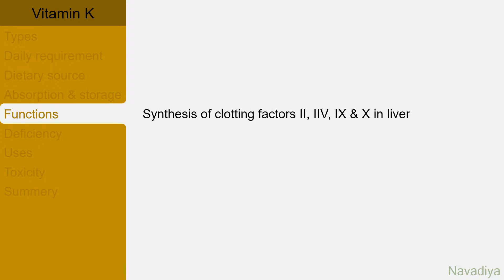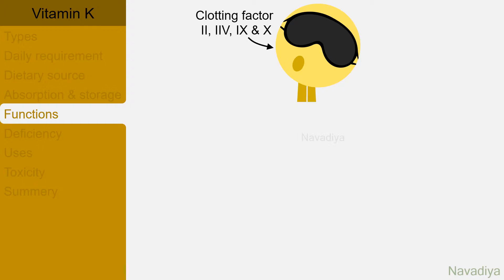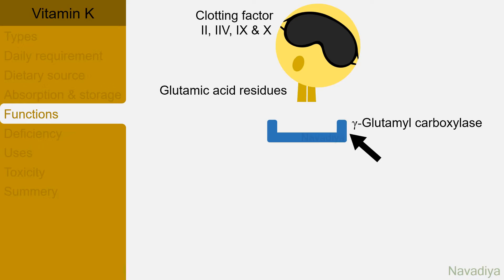The most important function: vitamin K is required for synthesis of clotting factors 2, 7, 9 and 10. Clotting factors 2, 7, 9 and 10 have glutamic acid residues. These residues need to be carboxylated for proper functioning of these factors. Gamma-glutamyl carboxylase is the enzyme for this reaction. The reaction also requires oxygen and carbon dioxide.